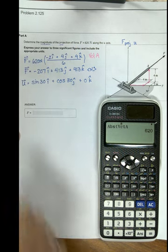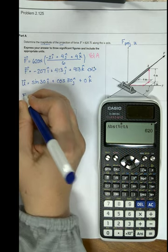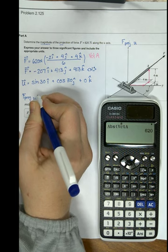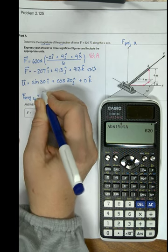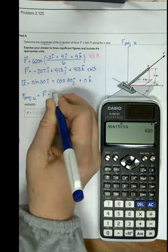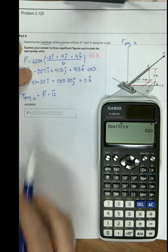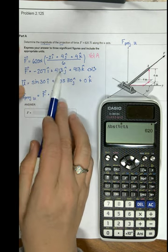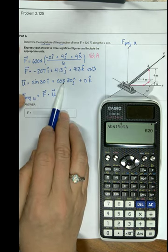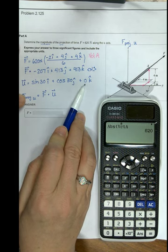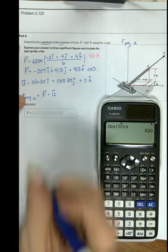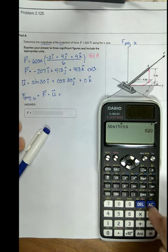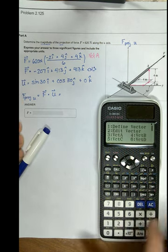Okay, so to find out how much F projected onto u is, vector F dotted onto the unit vector. So you're going to take your x component times x component plus y component times y component plus z component times z component. This should be a scalar value. I'm going to take advantage of my calculator here, and I'm going to say vector A...